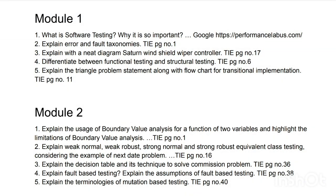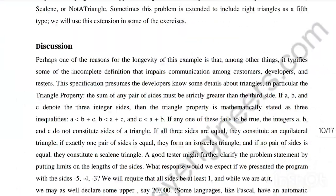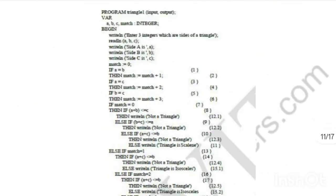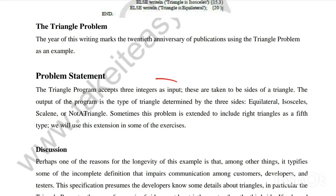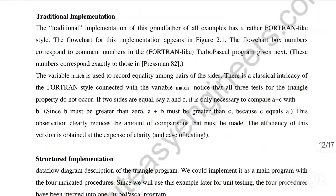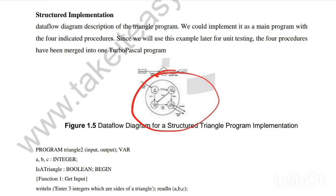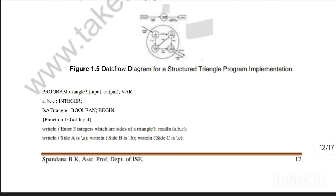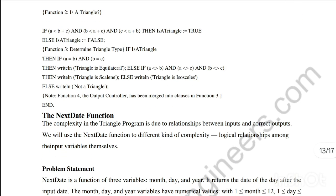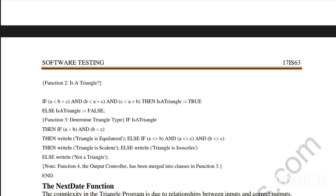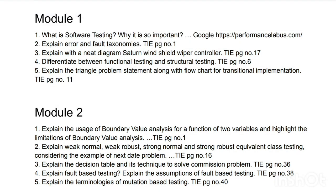The fifth question is: explain the triangle problem statement with the flowchart for traditional implementation — a very repeated topic, found at page number 11. There you can find the problem statement, discussion on how to solve it, the structured implementation, and the diagram. The diagram may not be fully clear so find a clearer version from other documents. The program code is also available there. Focus most on functional and structural testing and the triangle problem from Module 1.